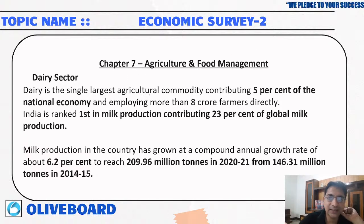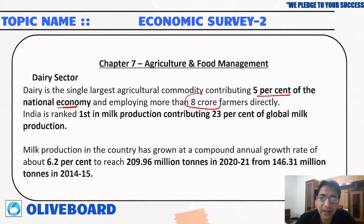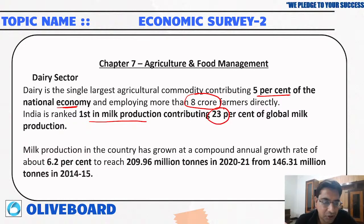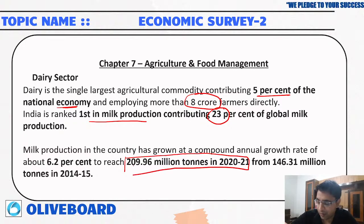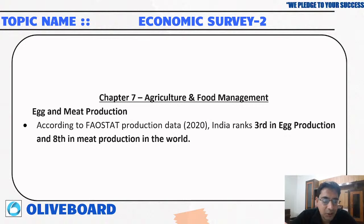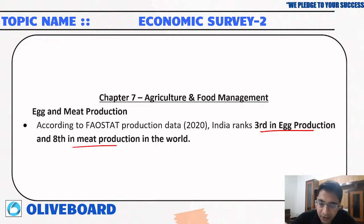The dairy sector is the single largest agricultural commodity, contributing 5 percent of the national economy and employing more than 8 crore families. India ranks first in milk production, contributing 23 percent of global milk production. Milk production has grown at a CAGR of 6.2 percent, reaching 209.96 million tons in 2020-21. According to FAO stats, India ranks third in egg production and eighth in meat production in the world.